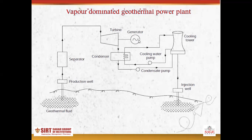The turbine is coupled with the generator to produce electricity. The exhaust steam coming out from the turbine is condensed in the condenser, with cooling water supplied from the cooling tower. The condensate is then sent back to the geothermal wells. This is the working principle of a vapor dominated geothermal power plant.